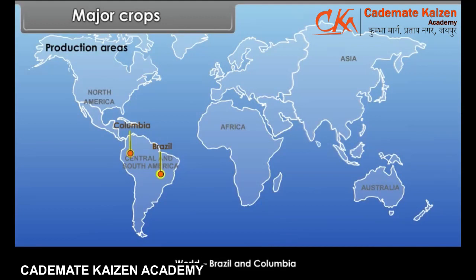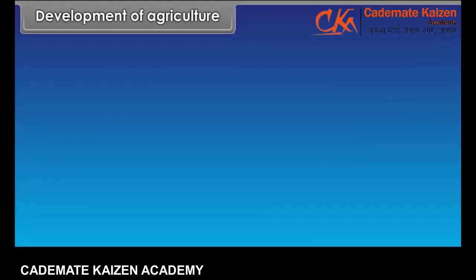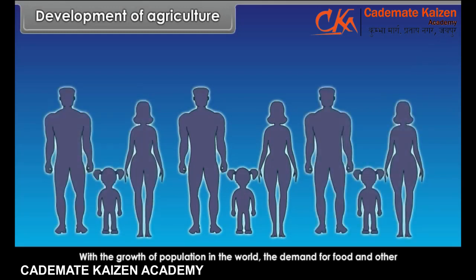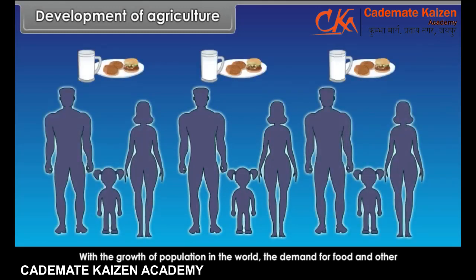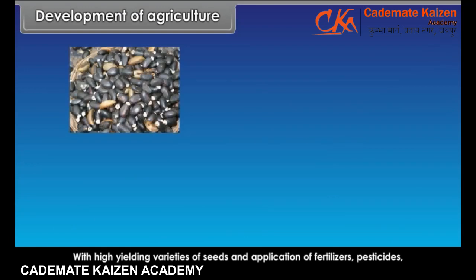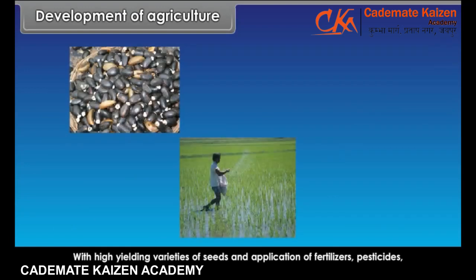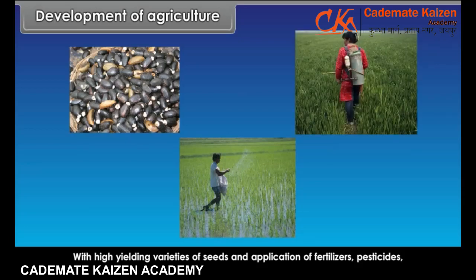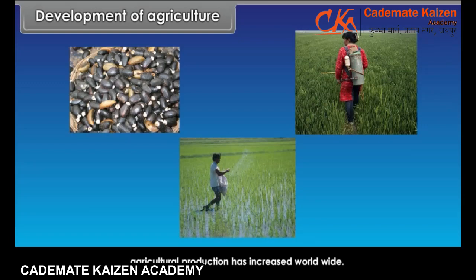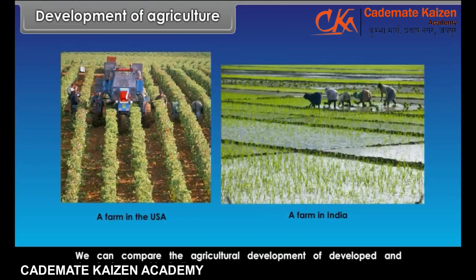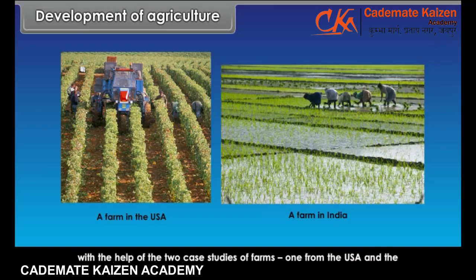With the growth of population in the world, the demand for food and other requirements also grew. With high yielding varieties of seeds and application of fertilizers, pesticides, insecticides and weedicides, agricultural production has increased worldwide. We can compare the agricultural development of developed and developing countries with the help of two case studies of farms — one from the USA and the other from India.